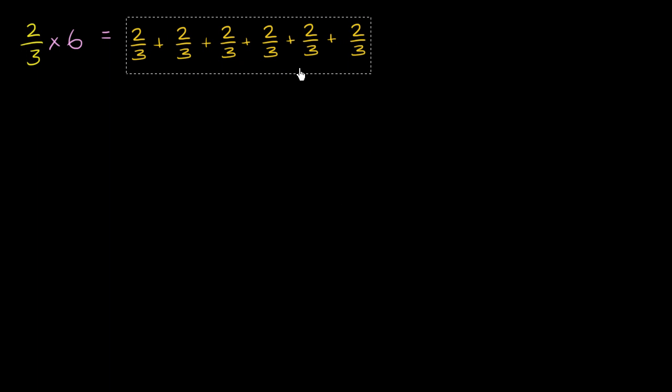And if we wanted to actually compute this, this would be equal to, well, we're going to take these 6 twos and add them together. So we could view it as 2 times 6 over 3,